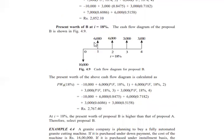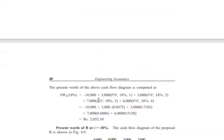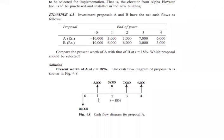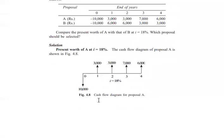The results show that the present worth of A is Rs. 2,052.10 and the present worth of B is Rs. 2,767.40. Since B has the higher present worth, proposal B should be chosen, as it yields a higher profit. Therefore, proposal B is selected.